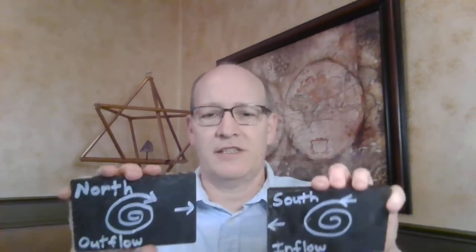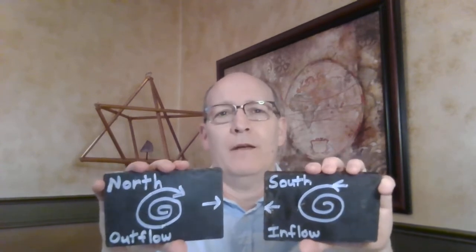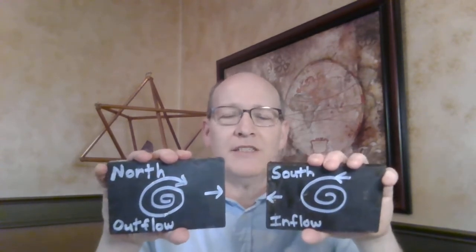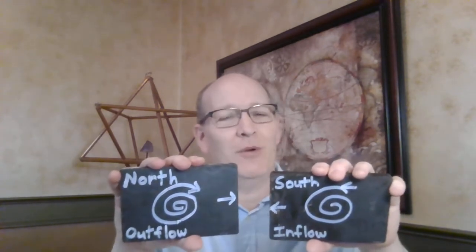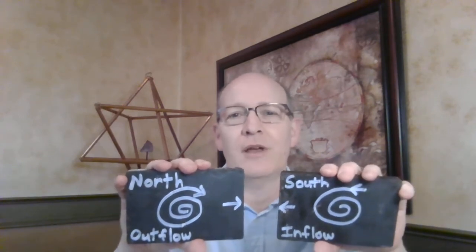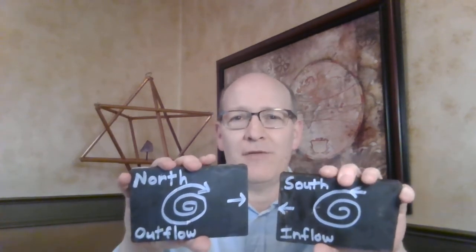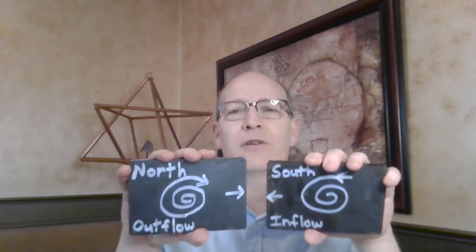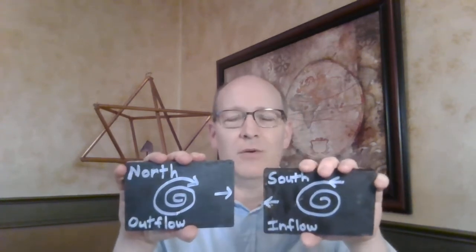Most everything around us is mostly what we would call energy — or we're told it's mostly space, but that's not true. Because deep within everything, there are still energy fields, still energy vortices that are composed of that etheric energy going through its process.